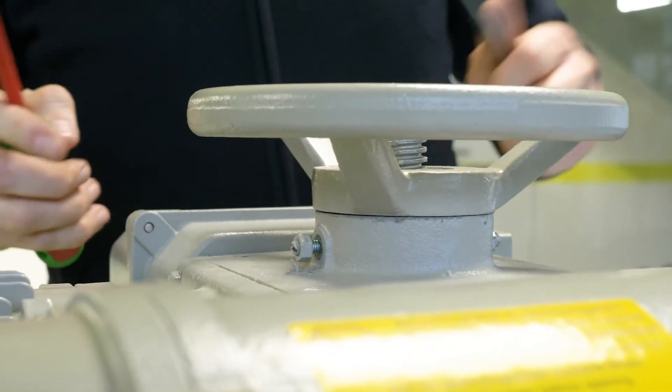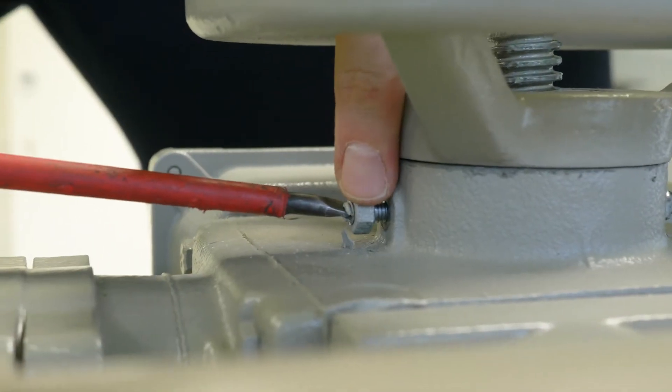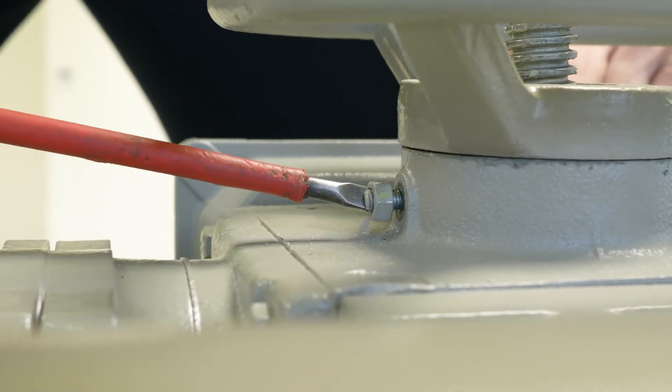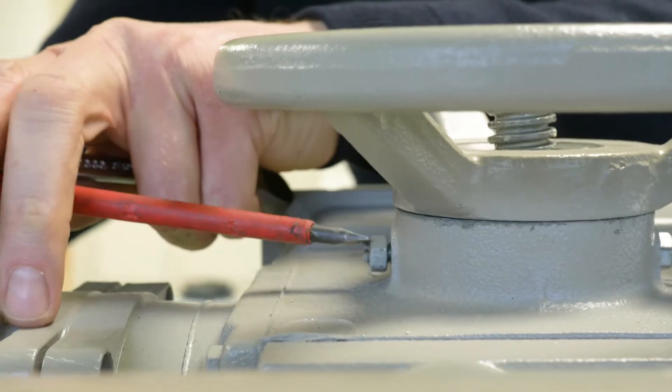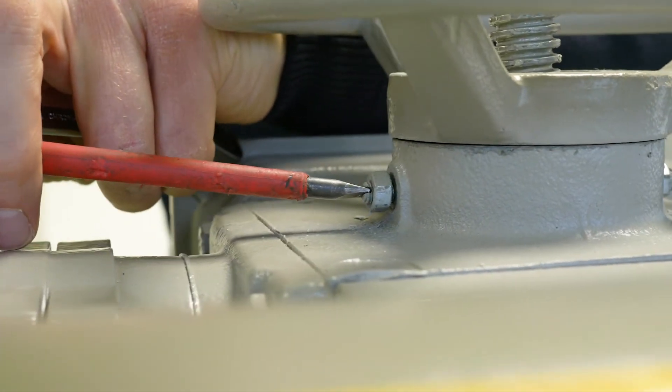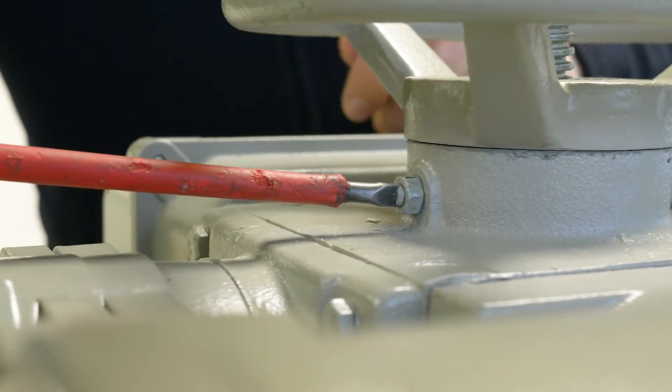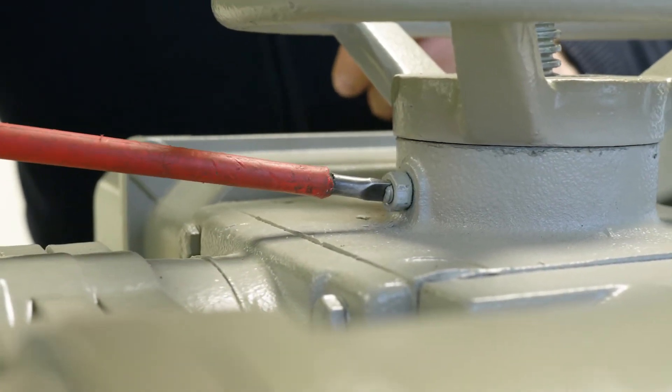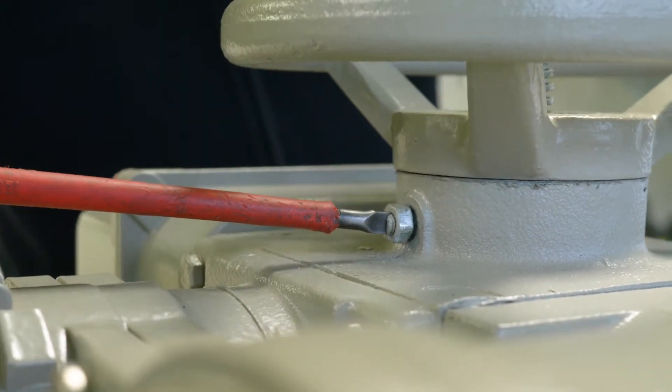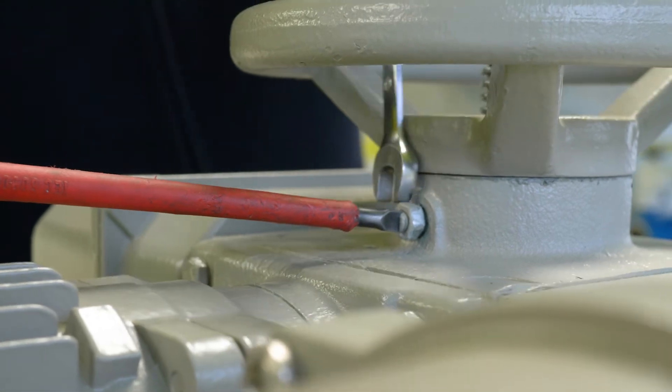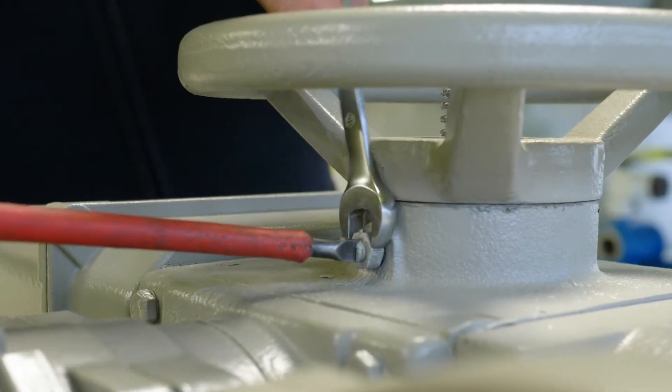And the same we do now on the other side. We tighten the worm screw, now it is tight and we turn back one or two turns and fix the nut, the counter nut of the worm screw.